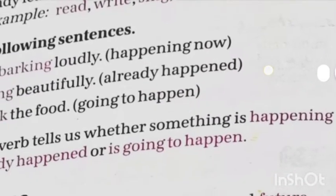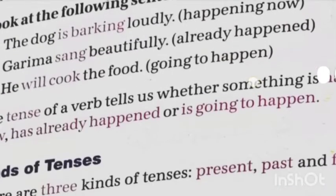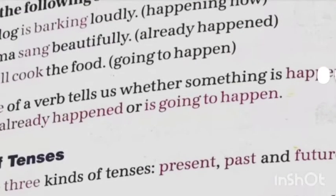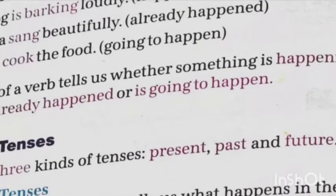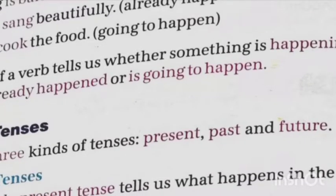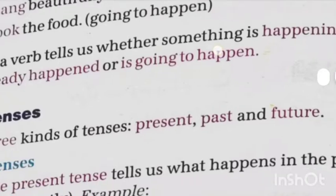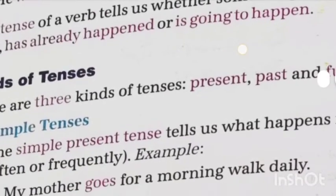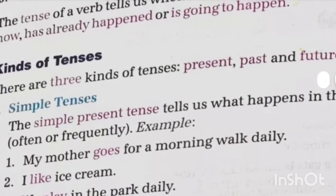The tense of a verb tells us whether something is happening, has already happened, or is going to happen. Based on these, there are three types of tenses: if the thing is happening, that depicts present tense; if the action has already happened, it depicts past tense; and if it's going to happen, the action will take place in future tense. We have already seen each word's meaning in Hindi and English.